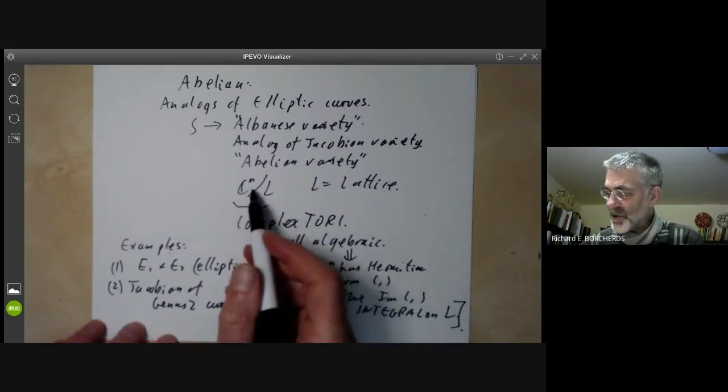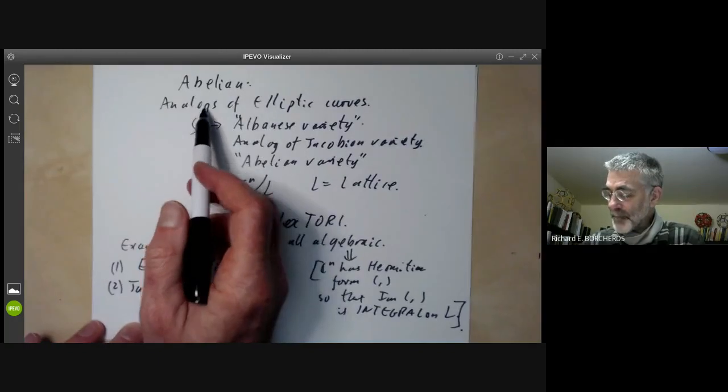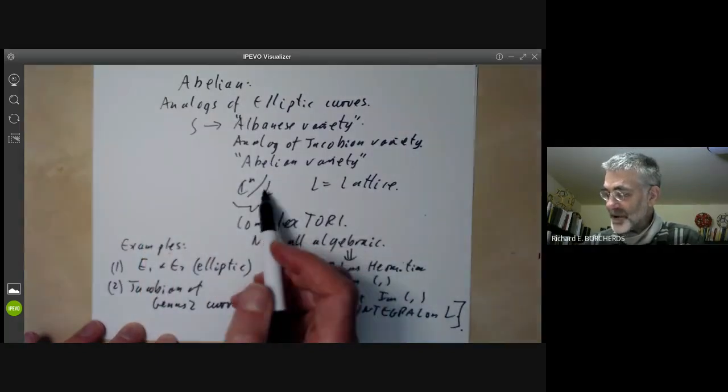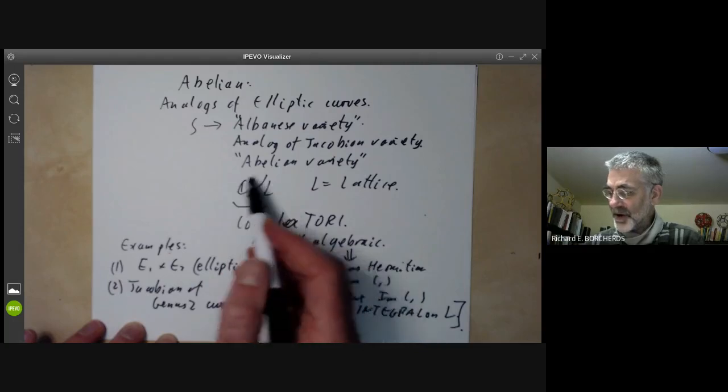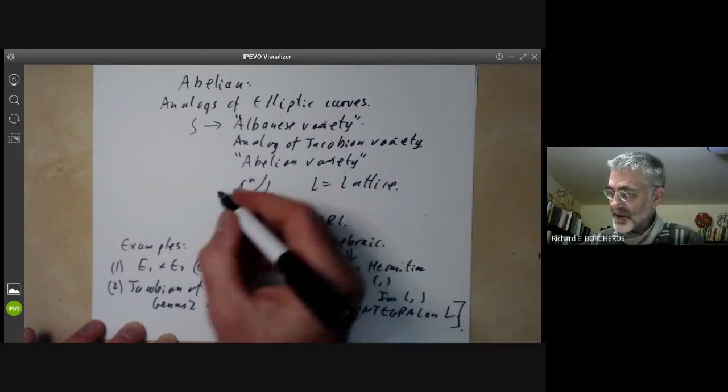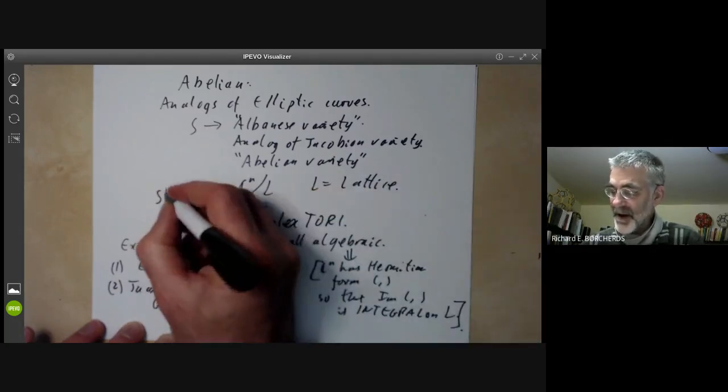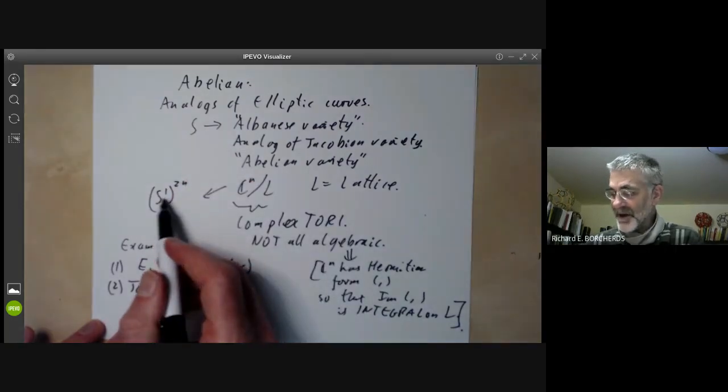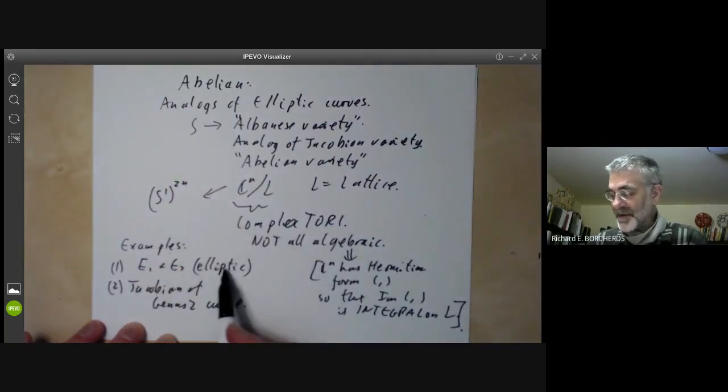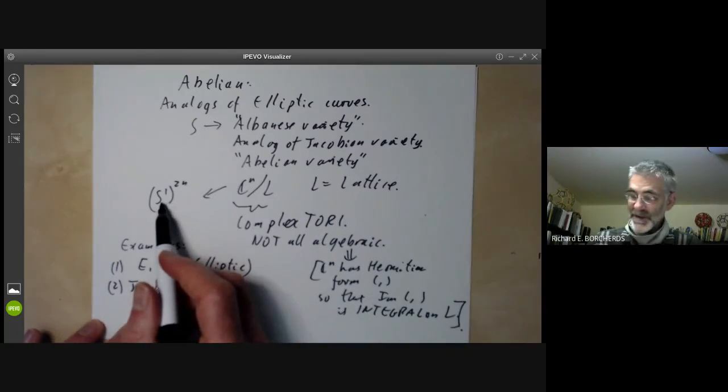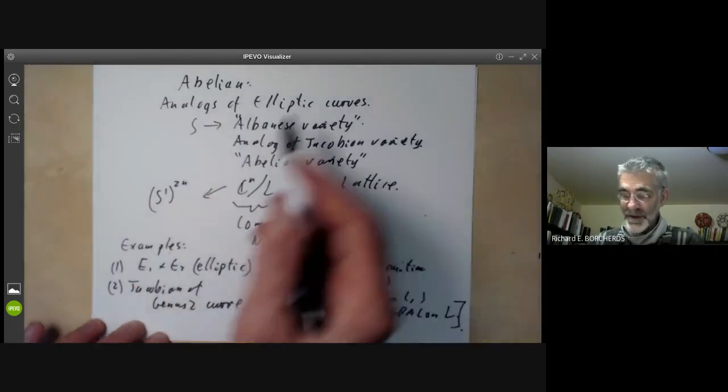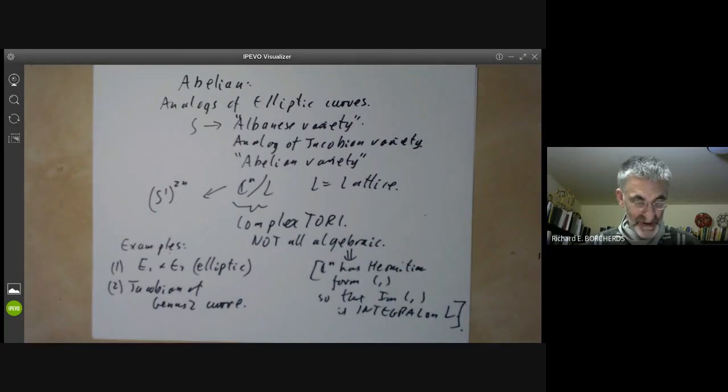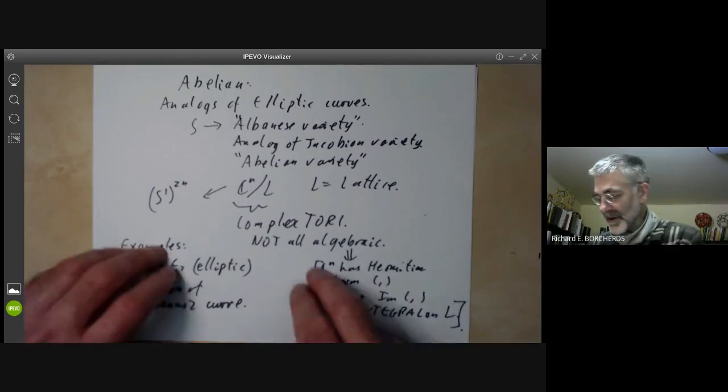People don't study abelian surfaces all that much, because pretty much everything you can say about abelian surfaces is actually a special case of some more general theorem about abelian varieties. I should mention, you can also write down the underlying topological space quite easily because as a topological space, this is just a product of 2n copies of a circle. So an abelian surface just looks like a product of four copies of a circle.